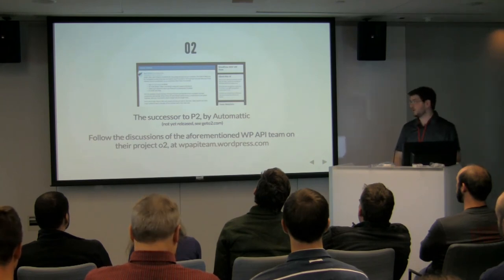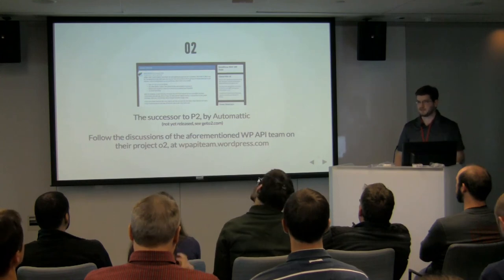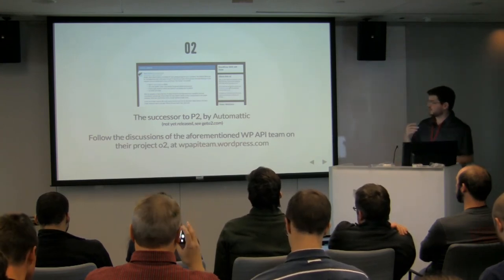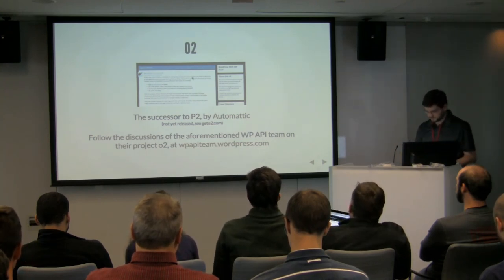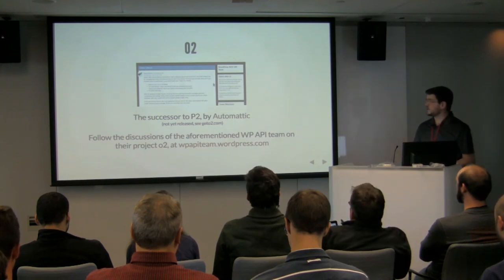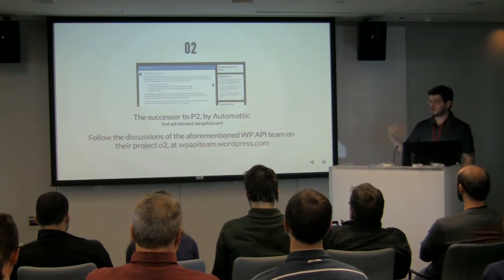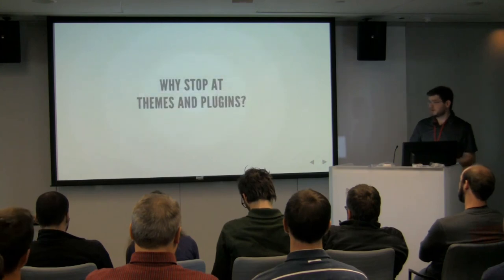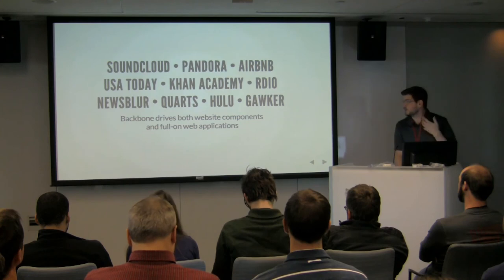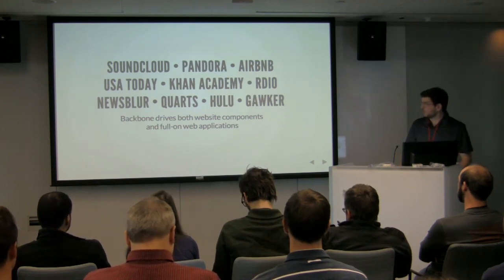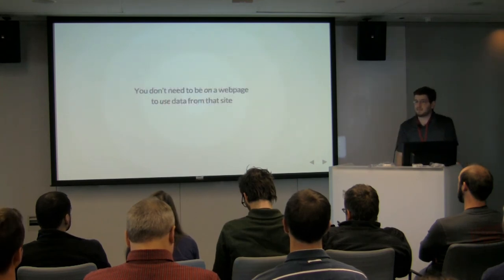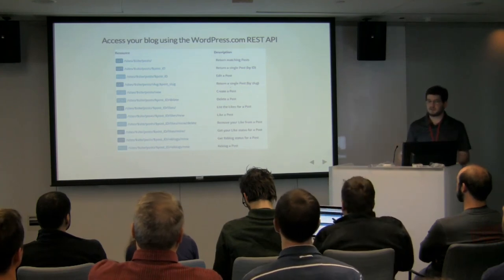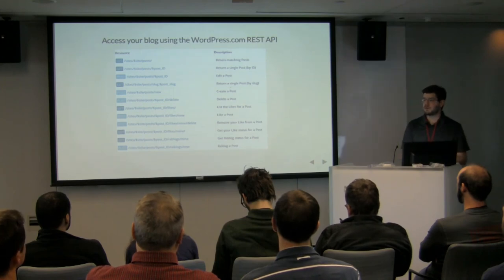O2 is an interesting plugin being developed at Automattic — it's meant to be a successor to P2, which is their project management theme. P2 is used very heavily to structure work on WordPress as an open-source project. O2 is a reimagining of P2 as a JavaScript application, providing a set of dynamic, on-page reloading, Backbone-driven tools that will let you take this powerful project management tool and make it even more responsive and real-time. But you don't have to stop at themes and plugins — it's possible to make standalone JavaScript and HTML applications that still use WordPress as their backend.